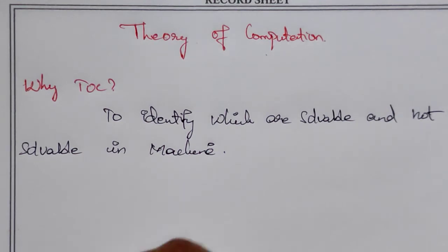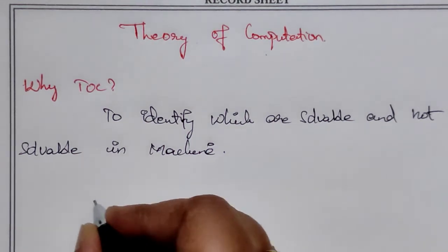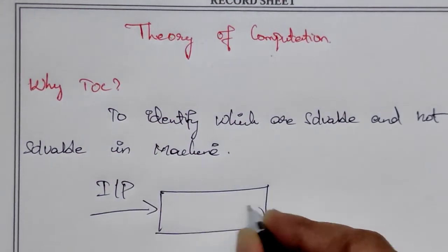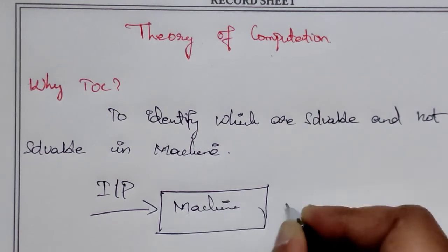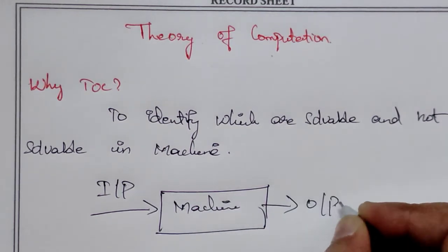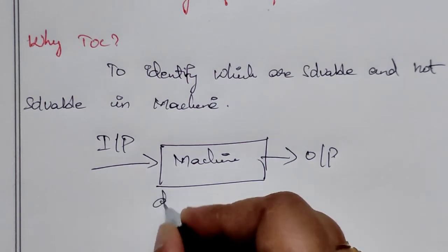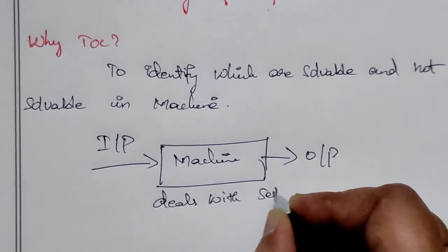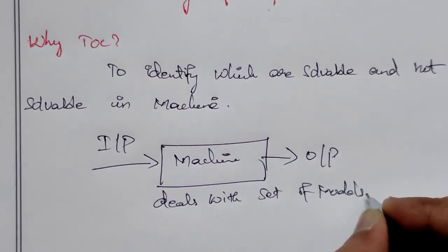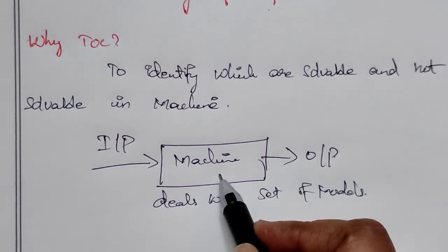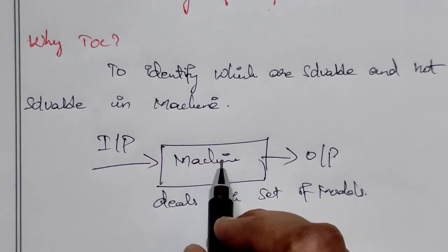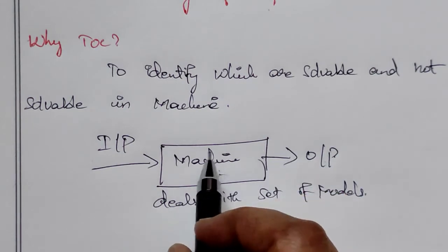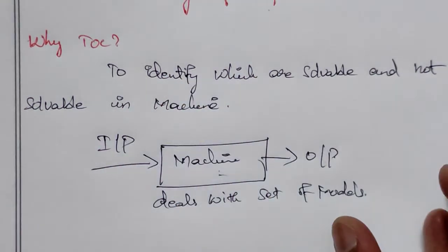So how do we identify the input to the machine? The machine gives us the output by dealing with a set of models. In the models, in the input process, we can do output — so whether the given input is solvable or not solvable.